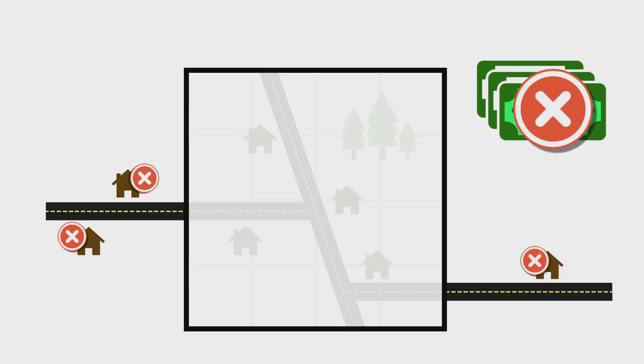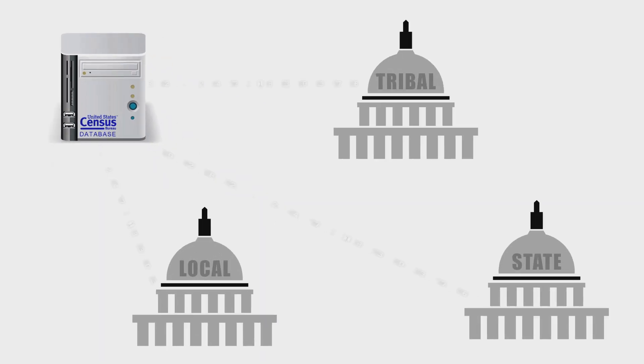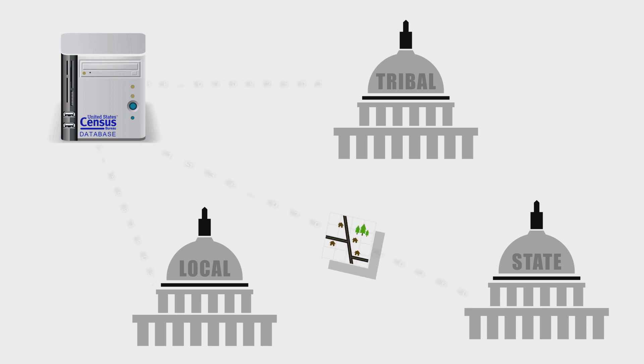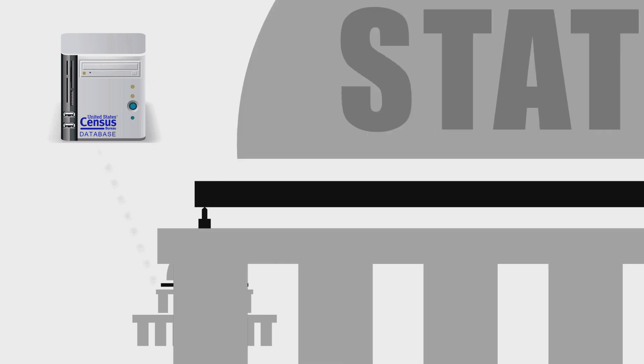Undercoverage can affect the allocation of federal funding for tribal, state, and local governments, as well as school districts. From our geographic database, we annually create maps and digital files for verification and updating by tribal, state, and local governments.